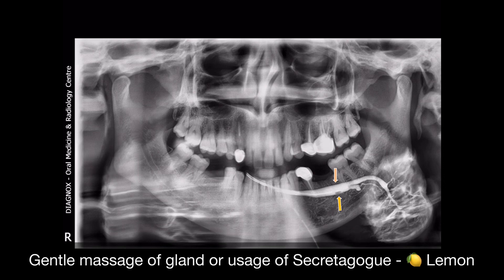The third phase in sialography is called the emptying phase, where we allow the contrast medium to flow back into the oral cavity. We can ask the patient to gently massage the gland, and we can also make use of lemon to bring back the contrast medium. Any residual contrast medium left in the gland could cause secondary infection and foreign body reaction, though the chances of dye stagnation are very low for water-based solutions like the one we used. The post-op radiograph also gives some idea regarding the extent of gland function and dye retention pattern.